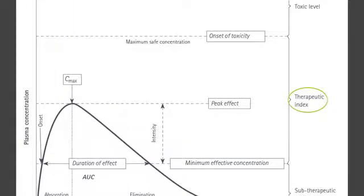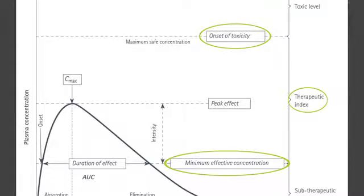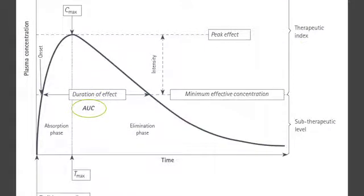The therapeutic index, or therapeutic range, is the difference between the minimum plasma concentration at which the drug is effective and the level demarcating the onset of toxicity, i.e., the minimum plasma level at which the drug becomes toxic.